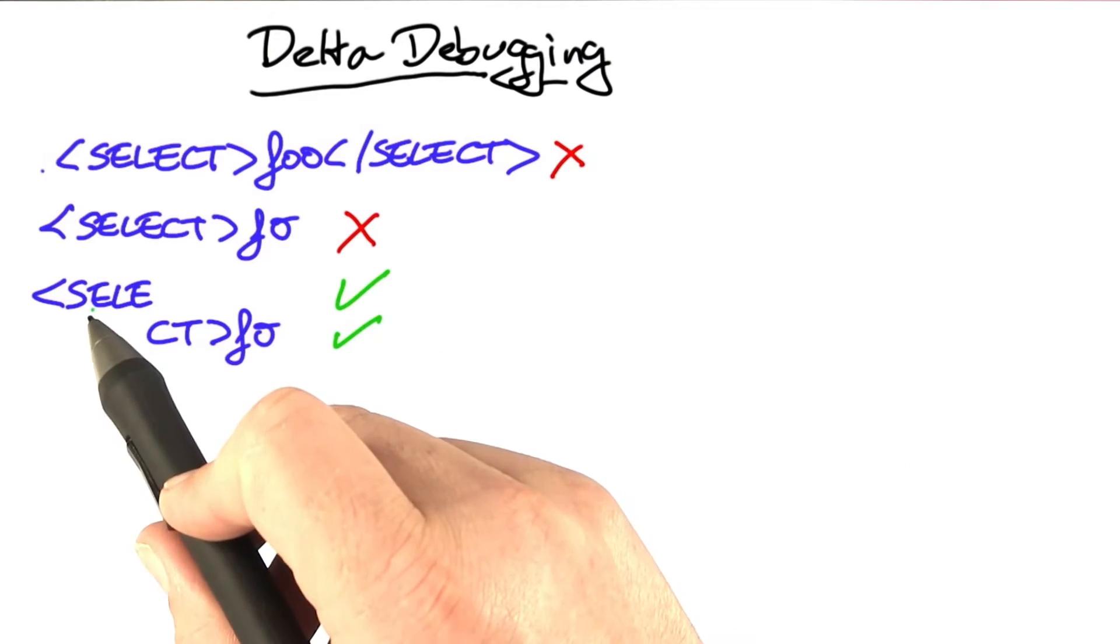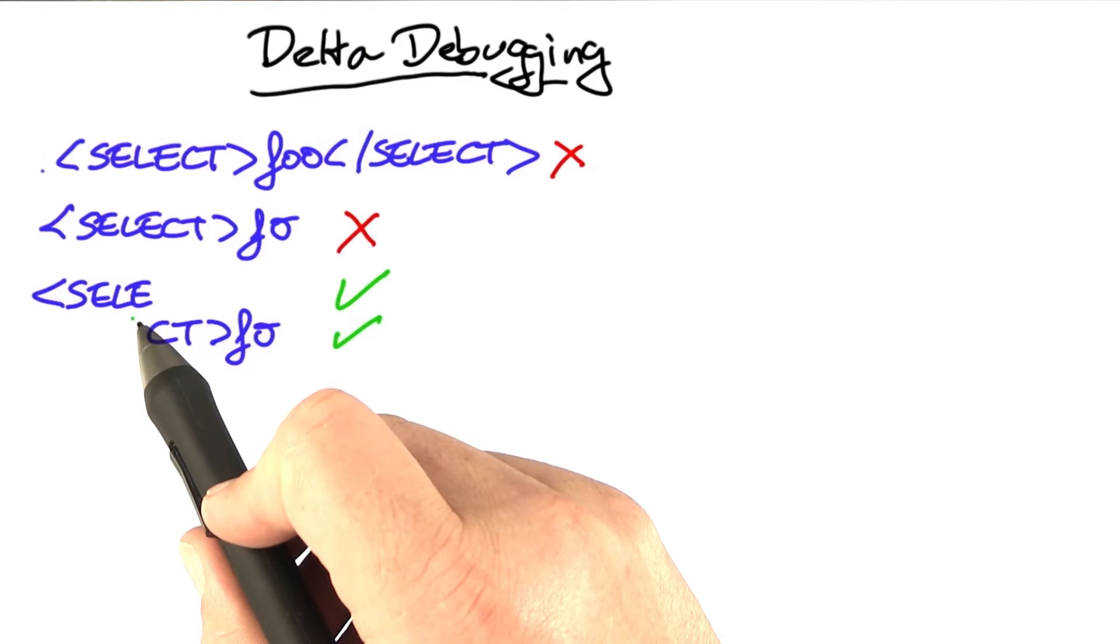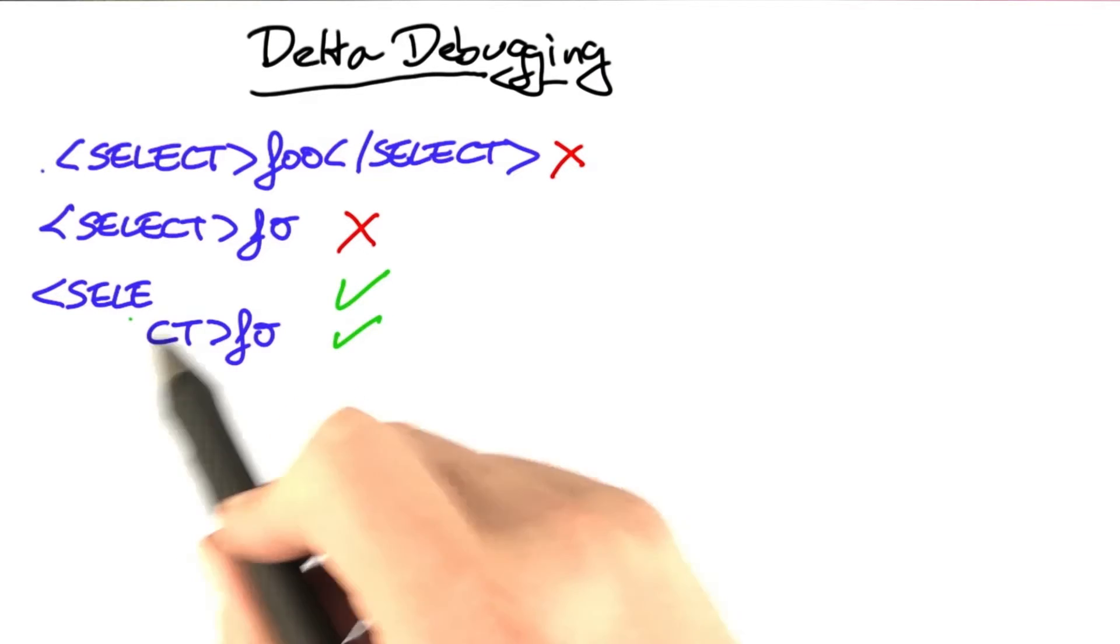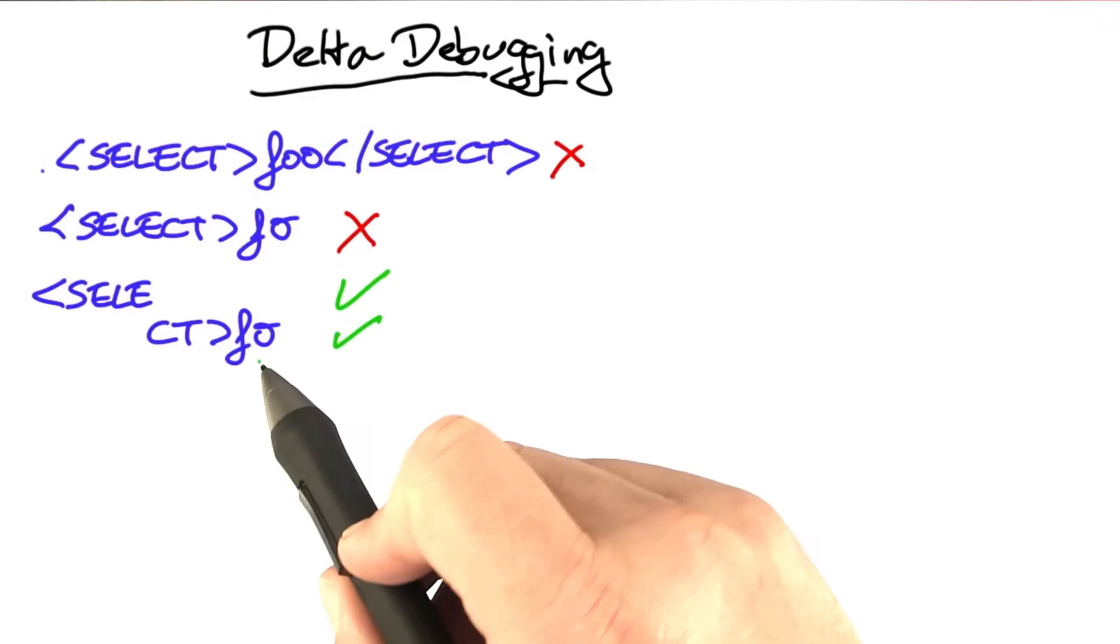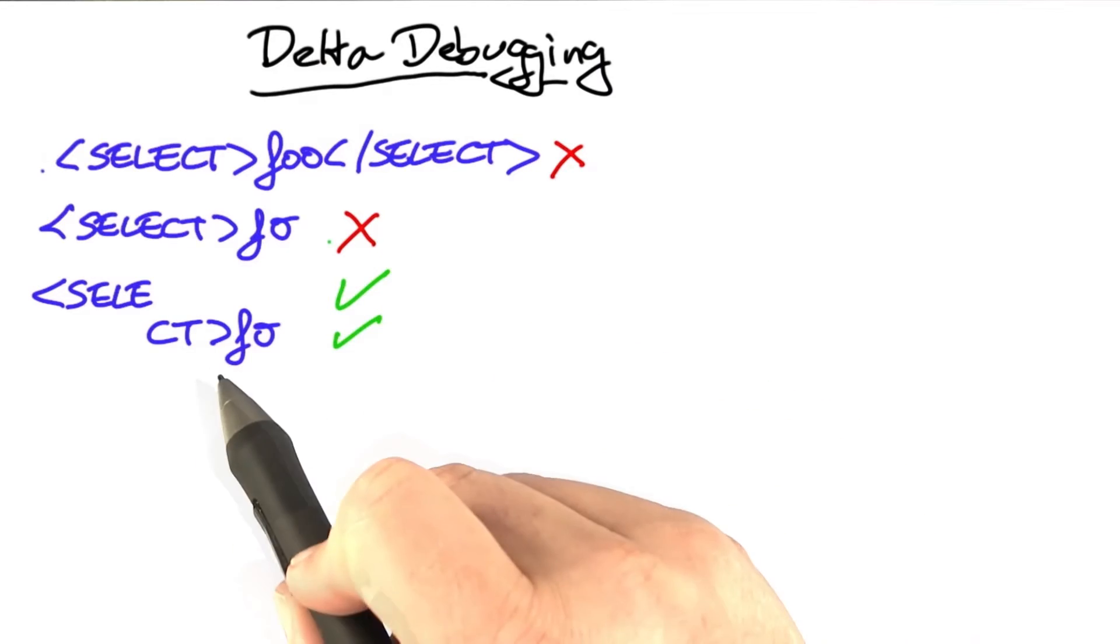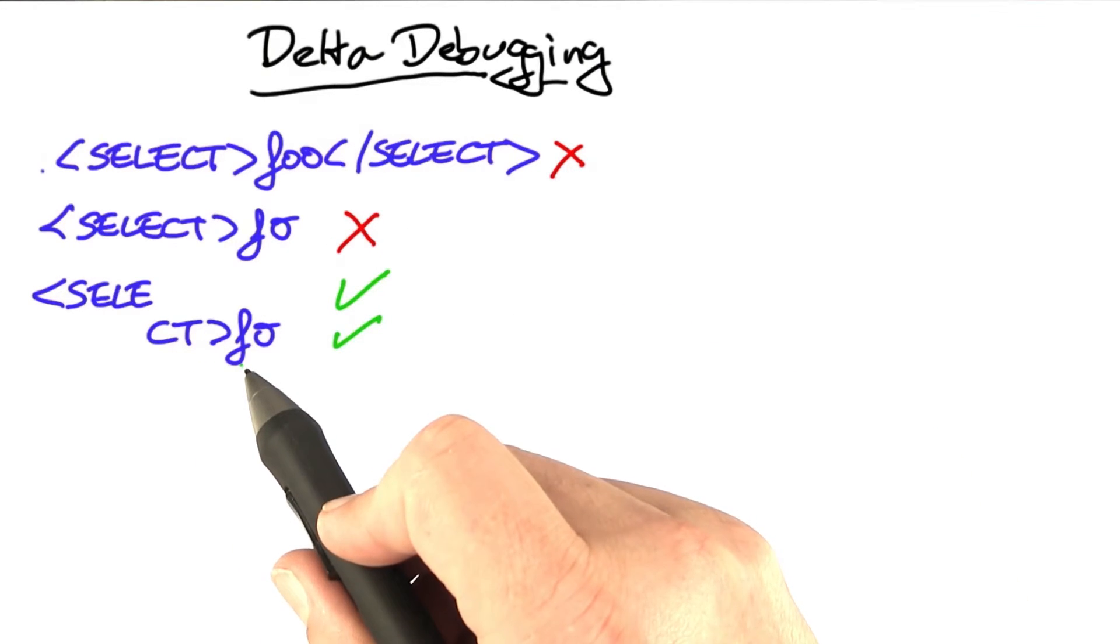And in this case, the binary search algorithm is stuck because the first half doesn't result in a simplification, and the second half doesn't result in a simplification either. So we stop here and simply return the entire string, which is what binary search does.